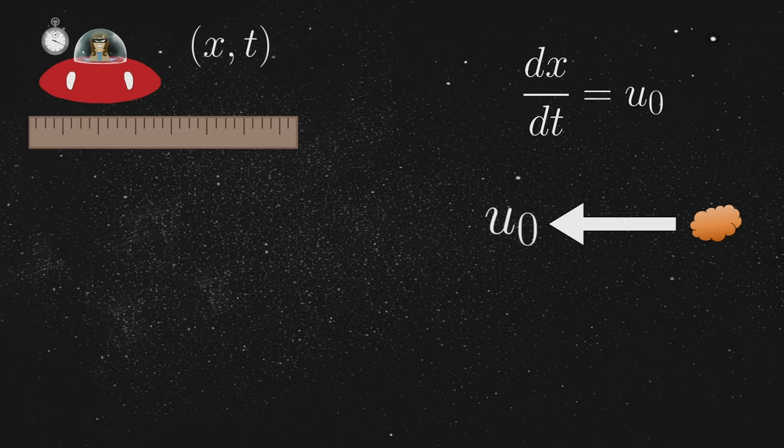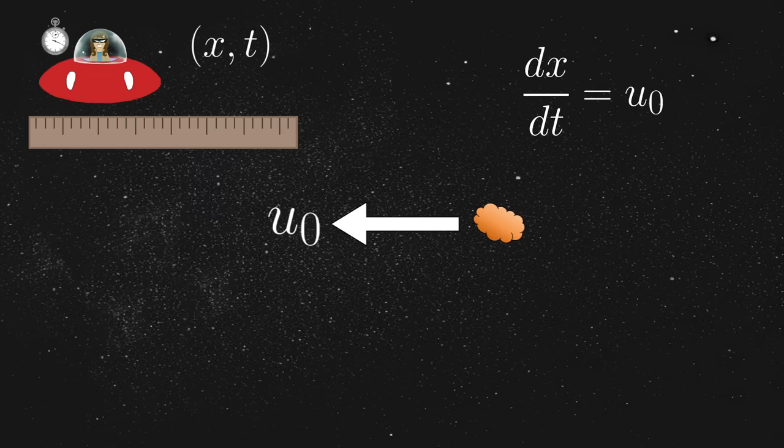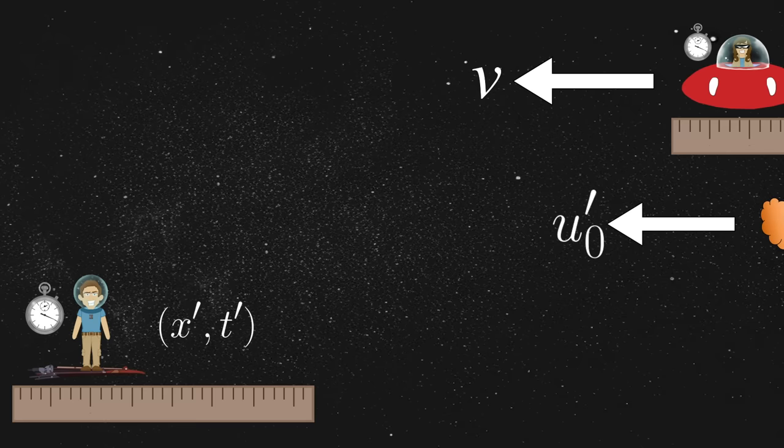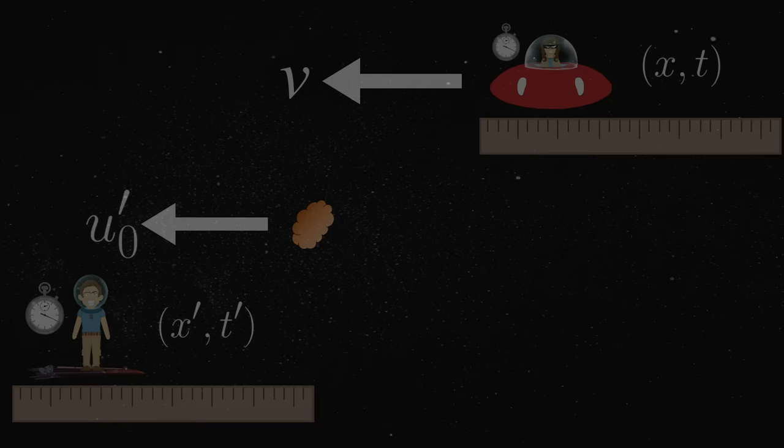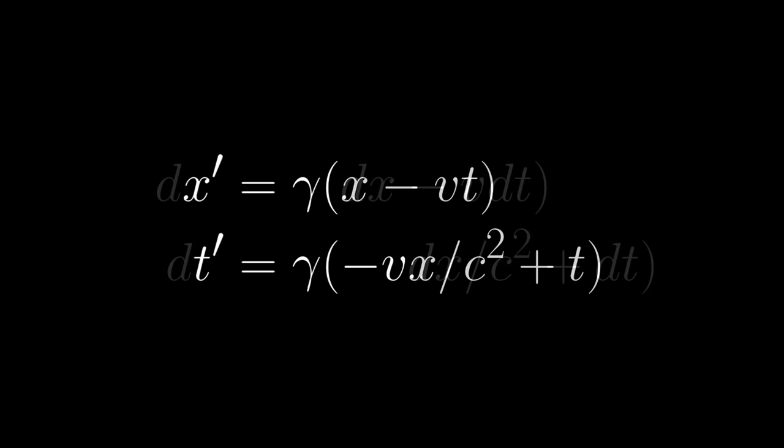Consider again that little piece of space rock floating by from Annie's perspective. According to the law of inertia, Annie necessarily observes a velocity of dx dt equals u sub zero. Now ask yourself what velocity, u sub zero prime, Jim should expect to see from his perspective. The answer is actually perfectly straightforward. First, we use implicit differentiation to derive the following expressions. Next, we simply divide the one by the other to find this.